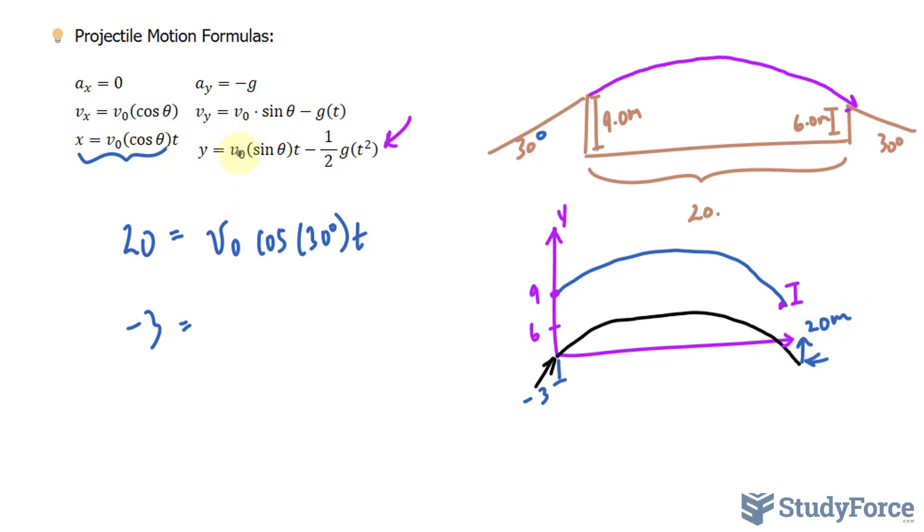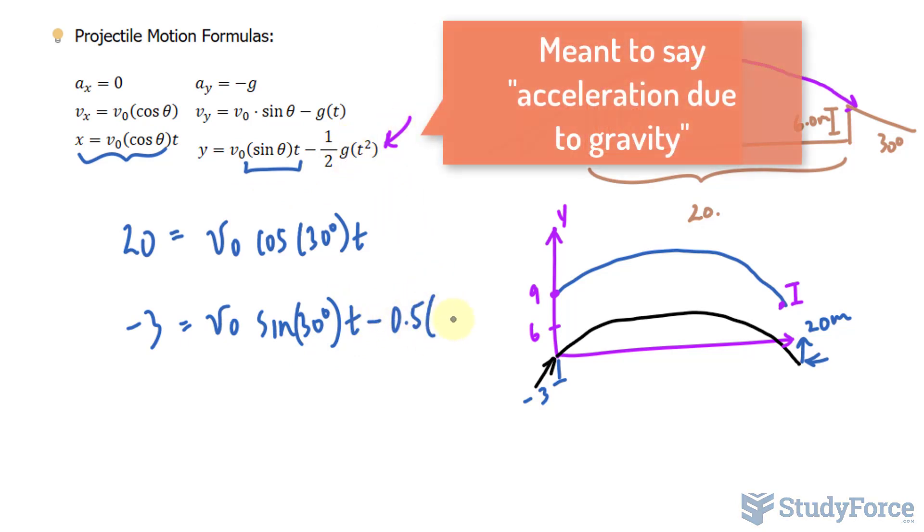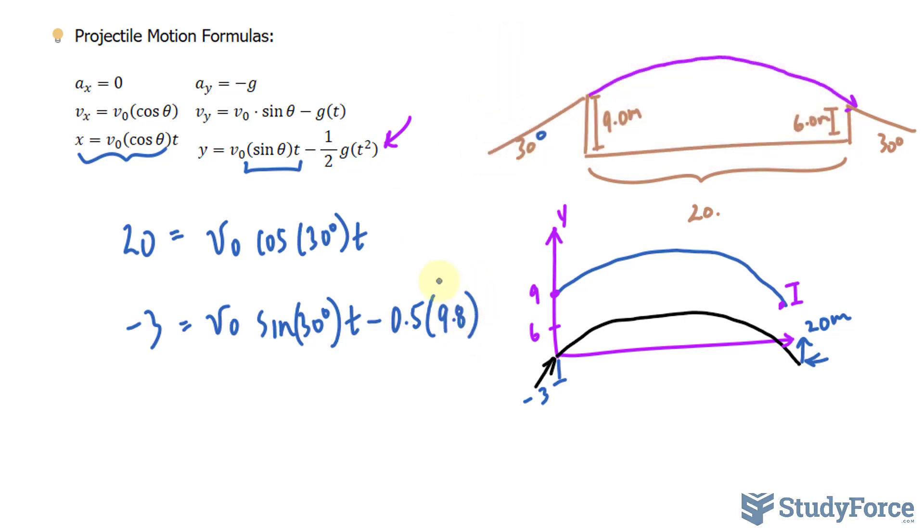Filling out this formula further, I still don't know my v initial so I'll leave it blank. Next comes sine at 30 degrees times t, that's this part, minus 0.5, the force due to gravity is 9.8 meters per second squared. And because gravity is pulling the object downwards and it's going in the opposite direction, we write down negative half. That's where the negative comes from in the formula. Then we have t squared at the end.